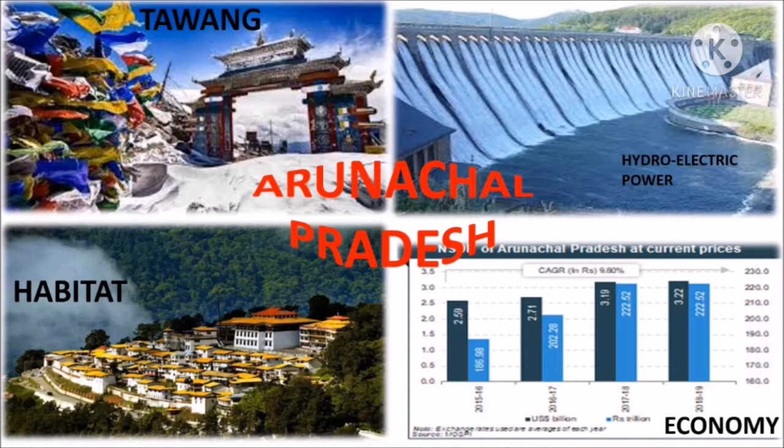Agriculture and Forest-Based Industries: The state is the largest producer of kiwis in India and the second largest producer of large cardamom. The state also has various inland fisheries resources. Tourism: During 2018, foreign tourist arrivals in the state reached around 7,653 while domestic tourist visits stood at 5,12,436. The state won the Best Emerging Tourist Destination in India Award for 2019 and also the Best Emerging Green Destination of 2019.